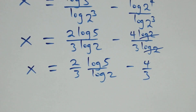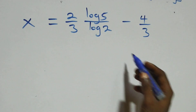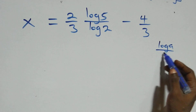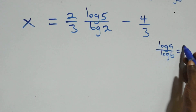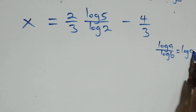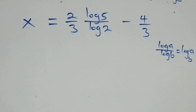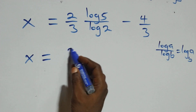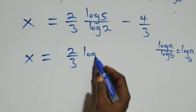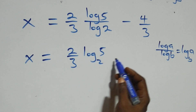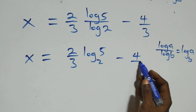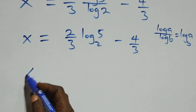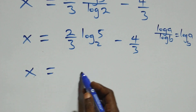Here we apply the change of base formula: log a over log b is the same thing as log a to base b. That gives us x equals two-thirds times log 5 base 2, minus four-thirds. We can bring this together with a common denominator of 3.